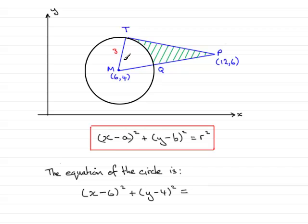So, rather than write 9 for 3 squared, keep it in that format, and so we just leave it as 3 squared. And that brings us to the end of this part of the question.